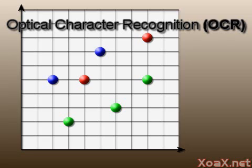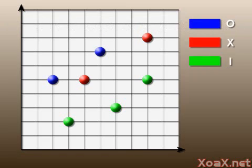For this lesson, we will create a neural network to perform optical character recognition, or OCR. And we will use the network to distinguish between the letters O, X, and I.